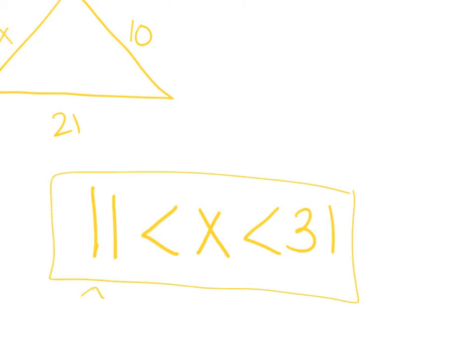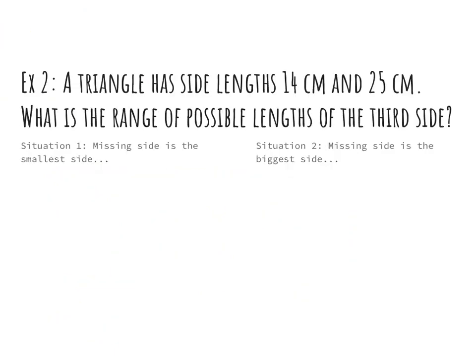If you're looking for a shortcut, you're subtracting to find the smallest number and you're adding to find the biggest. So again, if my sides are 14 and 25, the shortest possible is 11 because 25 minus 14 is 11. The biggest possible is 39.